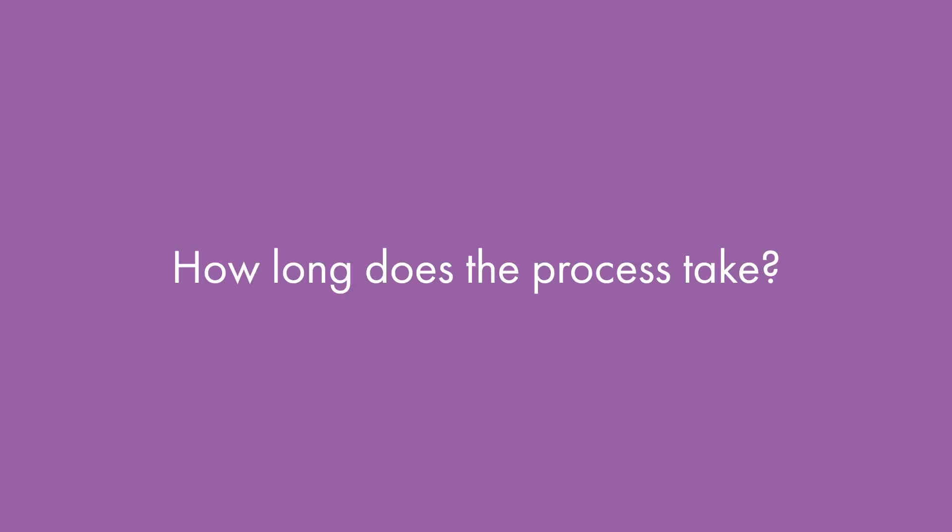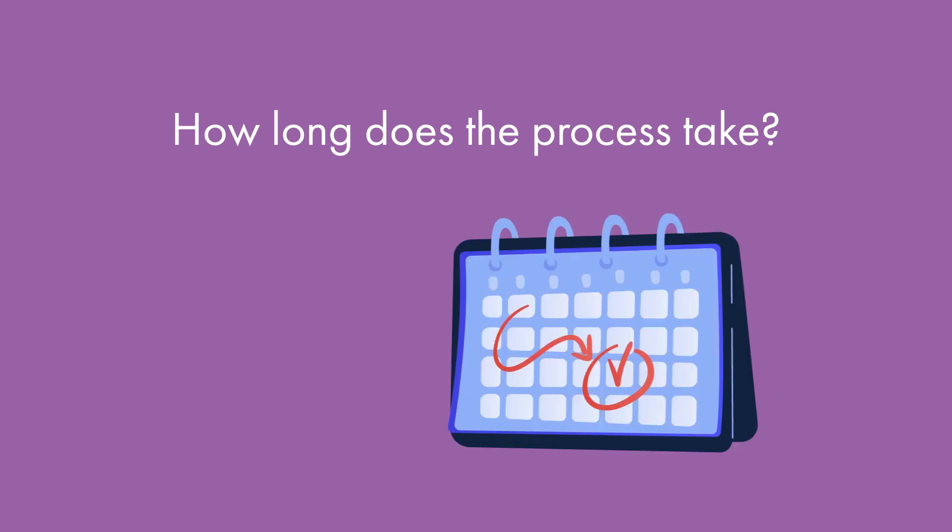How long does the process take? It normally takes at least 7 months to get a divorce. The timescale is the same for joint and sole applications. This timescale does not include any delays that may be caused by settling financial matters between the conditional and final orders.